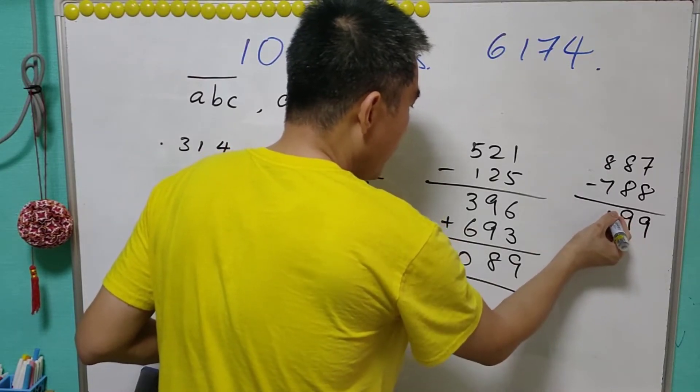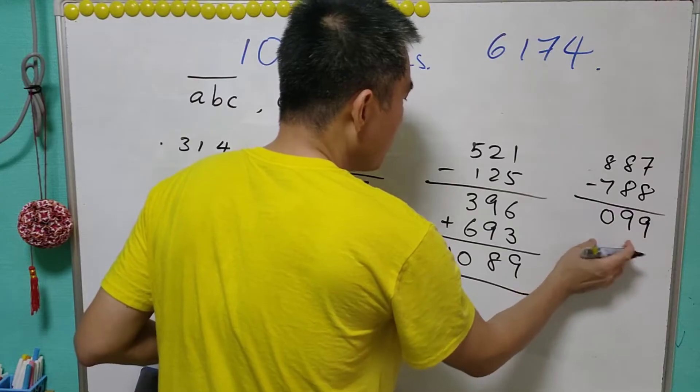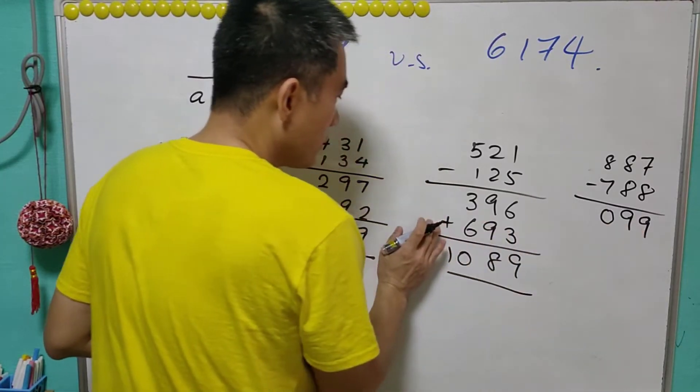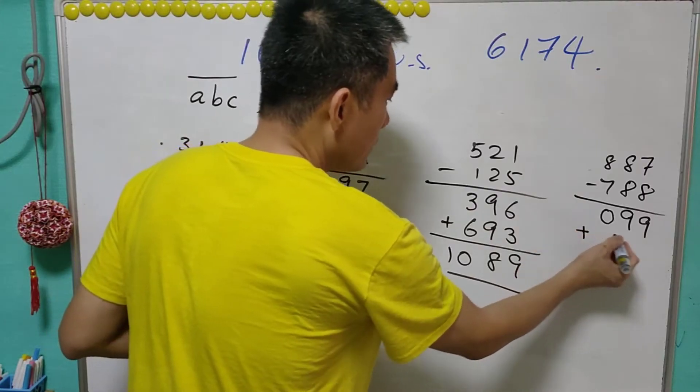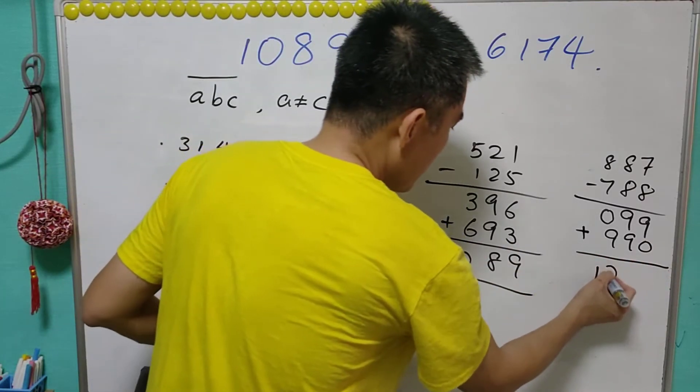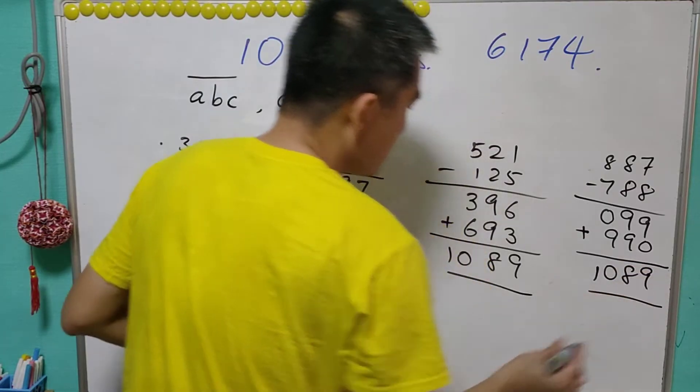But in this case we need to add a 0 so it becomes a three digit 099, and we do the same thing here: we add the reverse order of this three digit number and therefore we still get 1089.